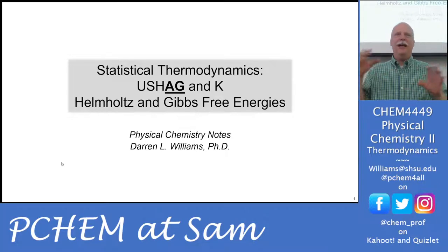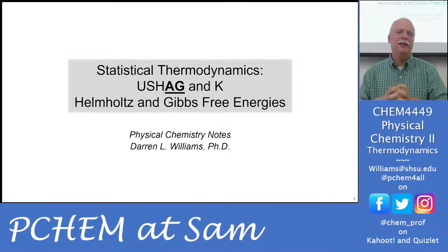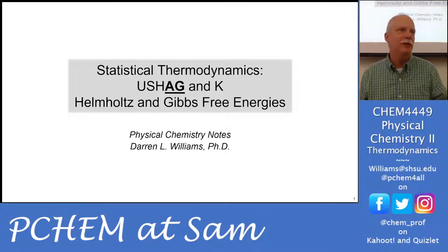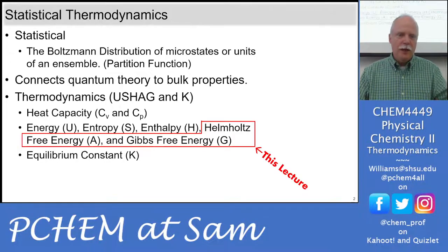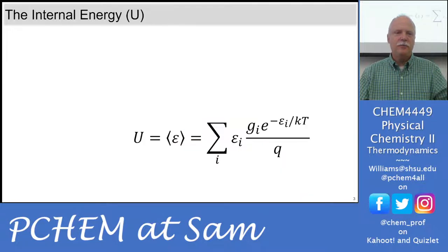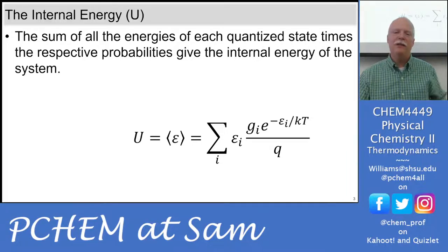We're going to finish out the USHAG and add in K. Next time we'll go over several examples like endothermic reactions, exothermic reactions, and so on. We're going to finish this whole statistical thermodynamic derivation of all of these macroscopic properties that we're used to hearing about using a quantum view of nature. Today we're going to cover these last three, and then also the equilibrium constant tacked on at the end. I'll zip through the first few because it's a repeat of the same slides, just to continue to build that ramp.